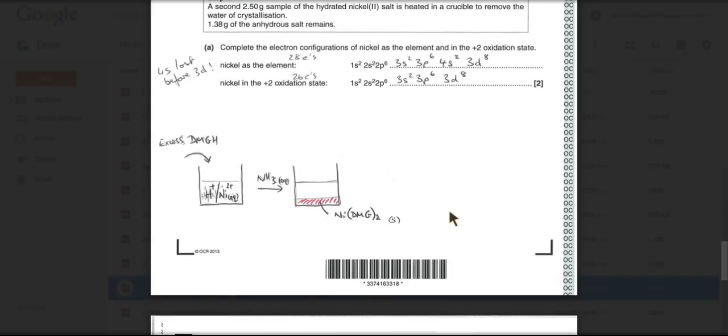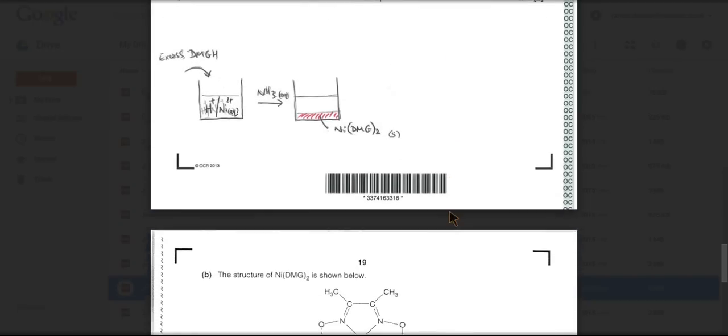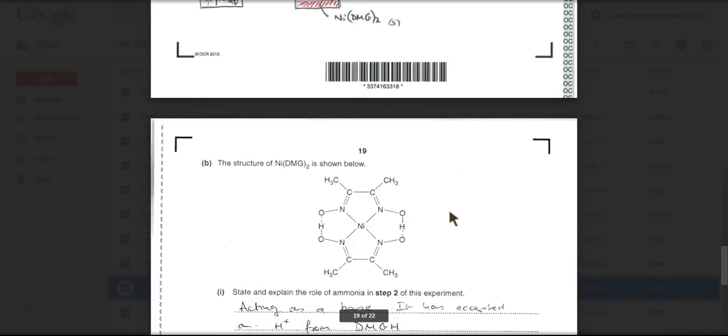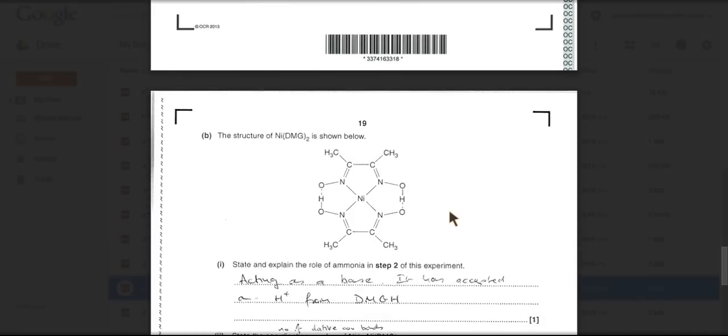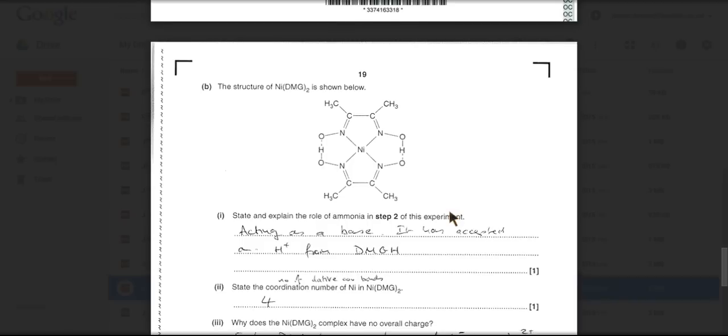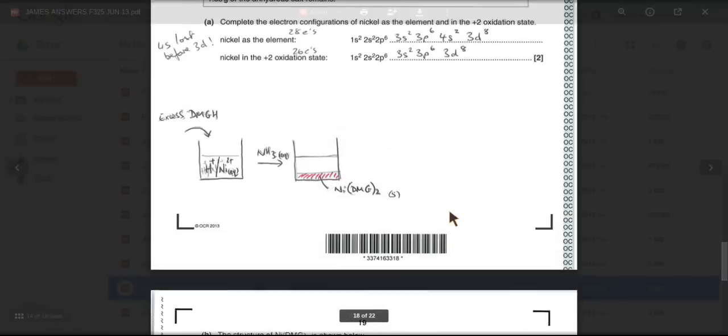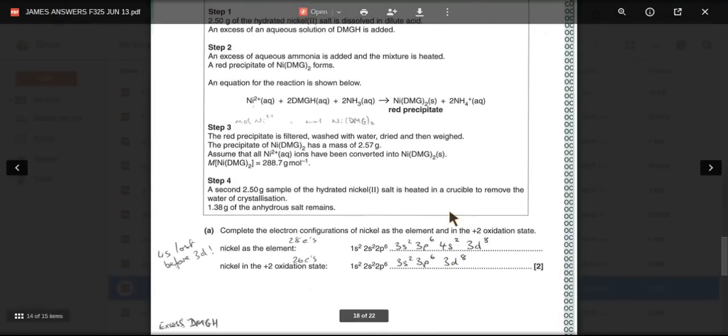The diagram refers to the calculation so I'll skip that. So there's the structure of NIDMG twice. State and explain the role of ammonia in step 2. So we'll go back to the equation for step 2. There it is there.